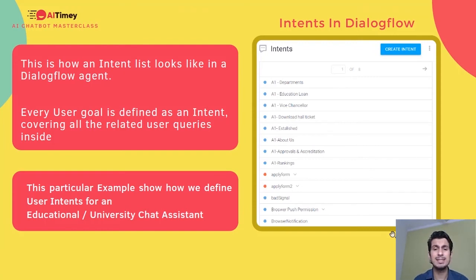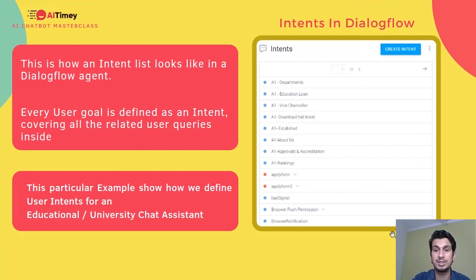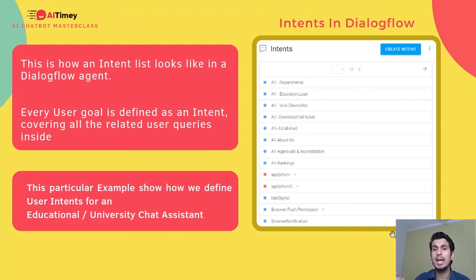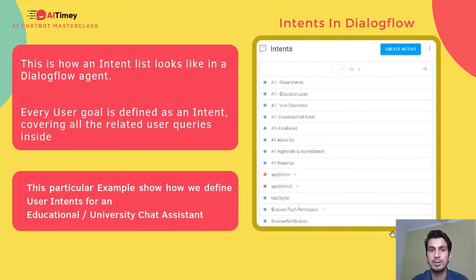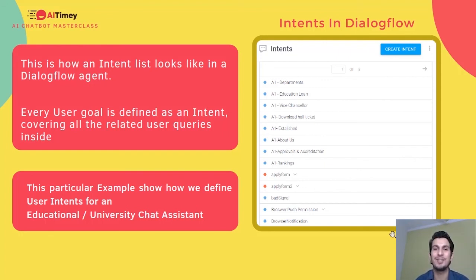This is exactly how an intent list looks in Dialogflow. This is a Dialogflow agent for a university, and there are different intents — departments, education loan, vice chancellor, download hall ticket, when was it established, about us, approvals, accreditation, and more. You can see very clearly that we have defined intents according to their end goal. That is how we categorize intents — with actions, with user goals, with all those questions having a single answer.